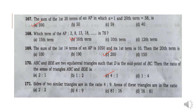Question 171: Sides of two similar triangles are in the ratio of 4 is to 9. The areas of these triangles are in the ratio 16 is to 81. Option D.